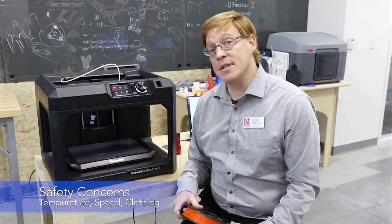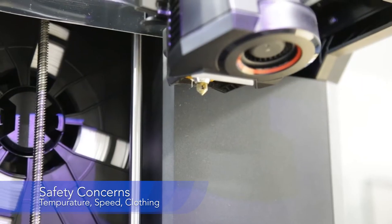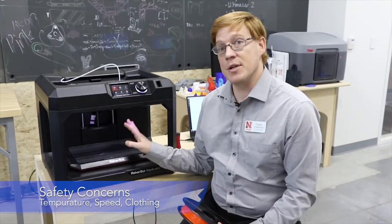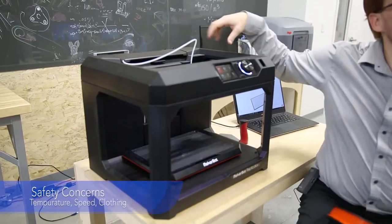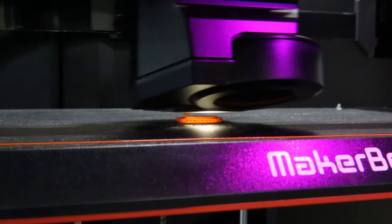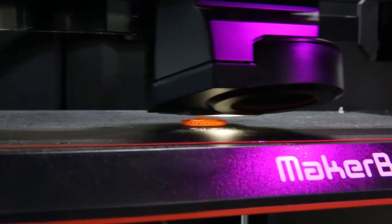So some of the safety concerns, the extruder gets extremely hot, over 200 degrees Celsius. So we want to make sure that that is not touched. Additionally, this gantry moves and is open, so we'll want to make sure that there's no loose clothing or jewelry.